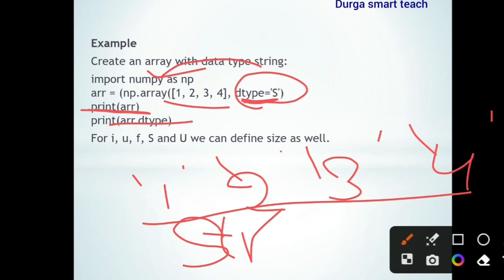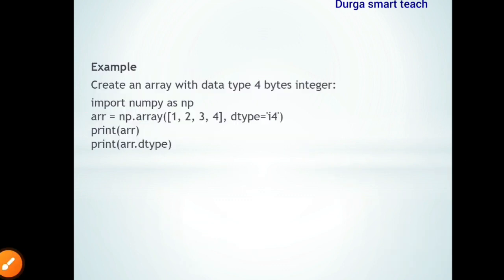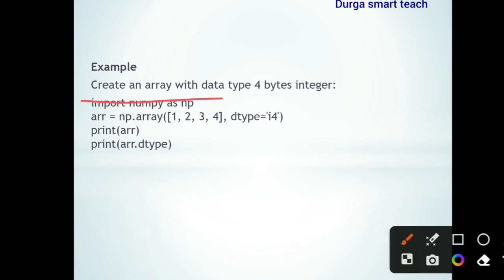For types like i, u, f, s, and u, you can also define the size in bits — whether 32-bit, 64-bit, 8-bit, or 4-bit. For example, to create an array with data type 4 bytes: `arr = np.array([1, 2, 3, 4], dtype='i4')`. Here 'i' means integer and '4' means each element occupies 4 bytes of memory.